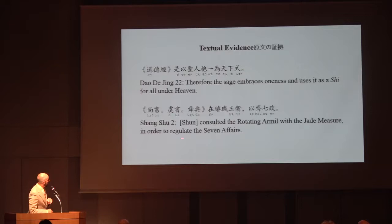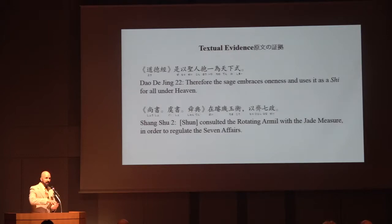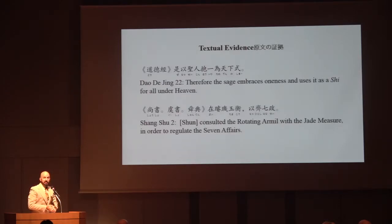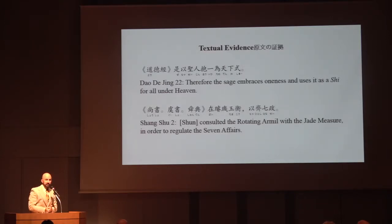The next quote from the Shang Shu talks about the emperor Shun: 'Shun consulted the rotating armillary.' The two characters here are Xuan Ji — 'xuan' meaning to revolve, and 'ji' being a device used for astronomical calculations with rings, i.e., an armillary. 'The rotating armillary with the jade measure' — the jade measure is another term for the dipper, the Northern Dipper constellation. So the emperor consults the rotating armillary on the jade measure — he consults his Shurpan — in order to regulate the seven affairs: the four seasons, the images of the heavens, the patterns of the earth, and the affairs of mankind.